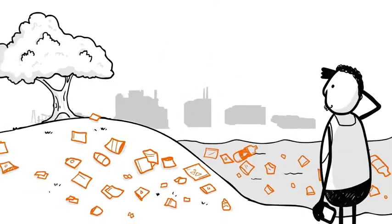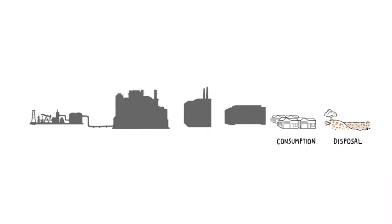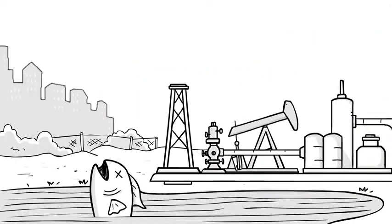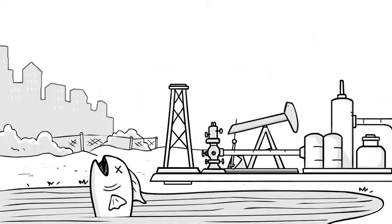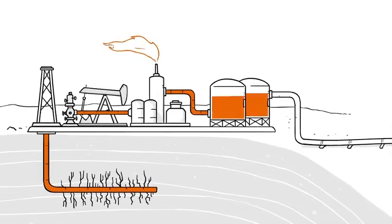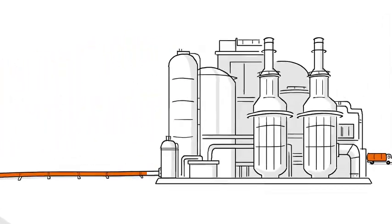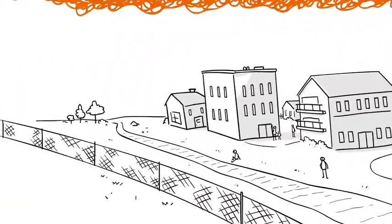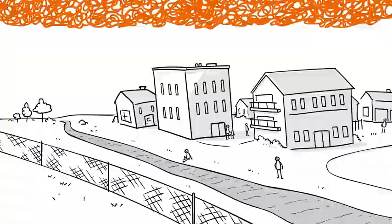The truth is, plastic has a whole life cycle that's hidden from view, one that harms people and the planet from start to finish. Let's start at the beginning. Plastic is made from fossil fuels like oil or fracked natural gas. Extracting those fossil fuels and turning them into plastics creates a lot of pollution, pollution that most often affects marginalized communities nearby.